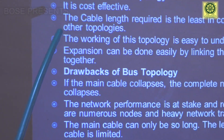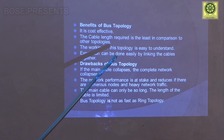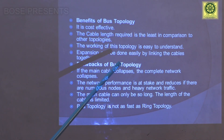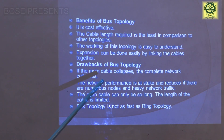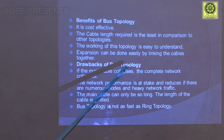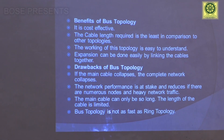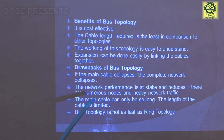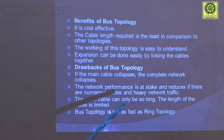The benefits of bus topology: it is cost effective and the cable length required is the least in comparison to other topologies. The working of this topology is easy to understand, and expansion can be done easily by linking the cables together. The drawbacks: if the main cable collapses, the complete network collapses. Network performance reduces if there are numerous nodes and heavy network traffic. The main cable length is also limited.